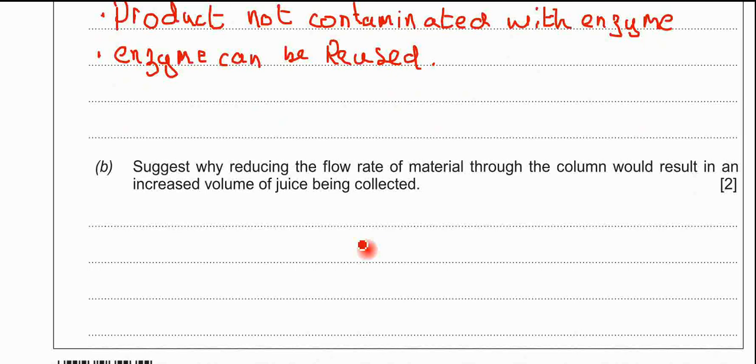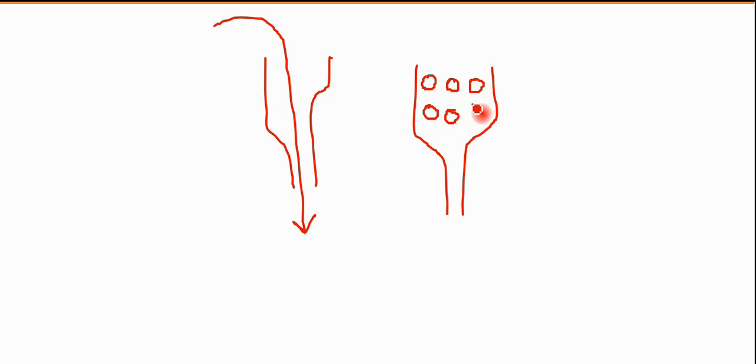What that means is you add apple at the top and it comes out the bottom, and you keep on doing that. Continuously add apple pulp and you continuously make the product. I've just written in two of the examples I've mentioned there. Part B suggests why reducing the flow rate of material through the column would result in an increased volume of juice being collected. If you've got the column there, the flow rate means how fast the apple juice will run through the column.